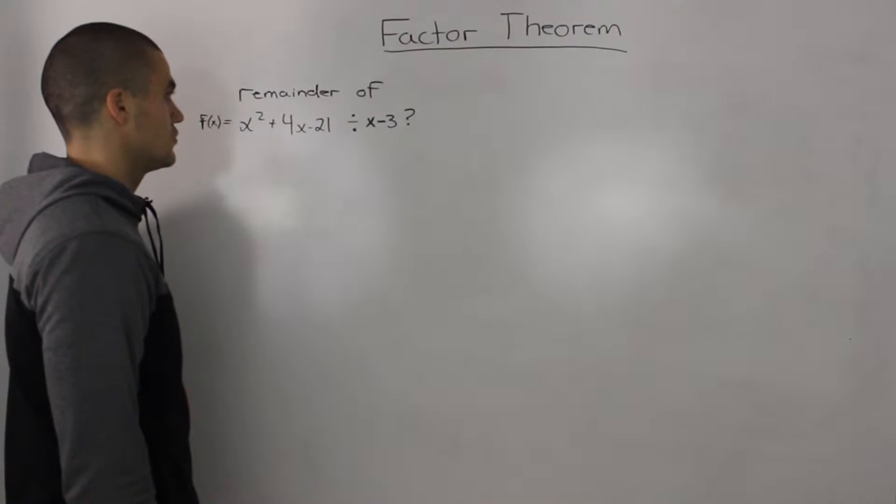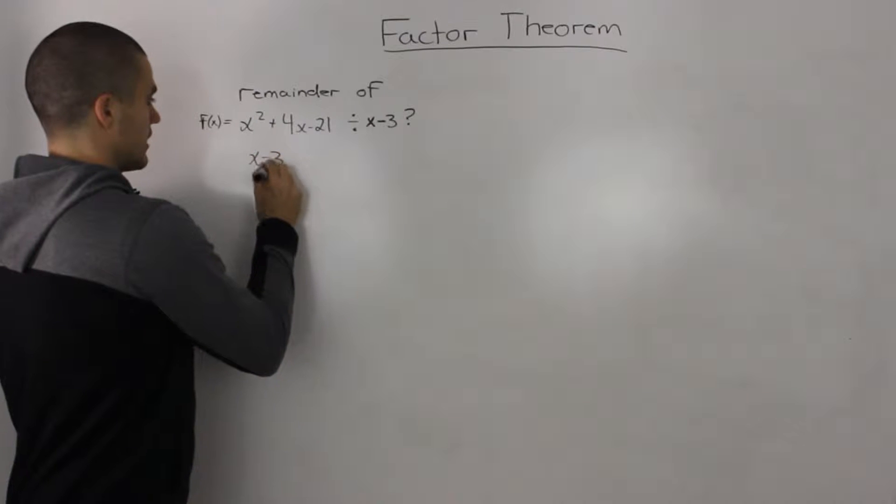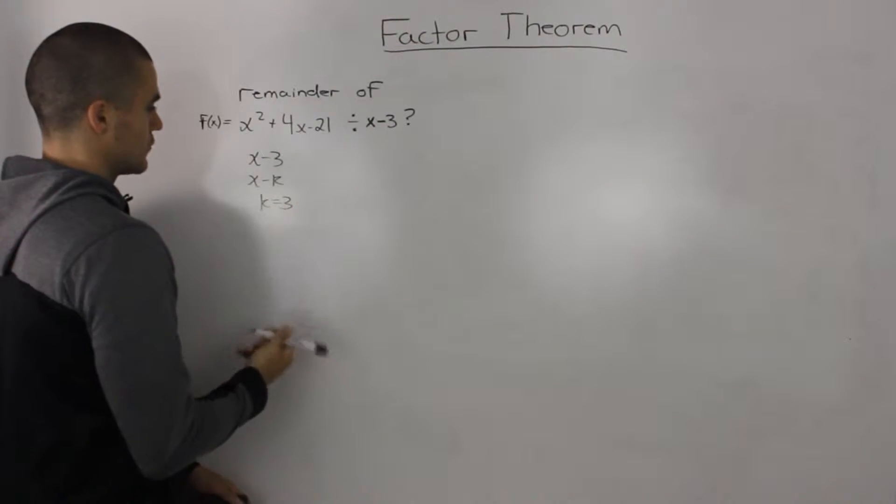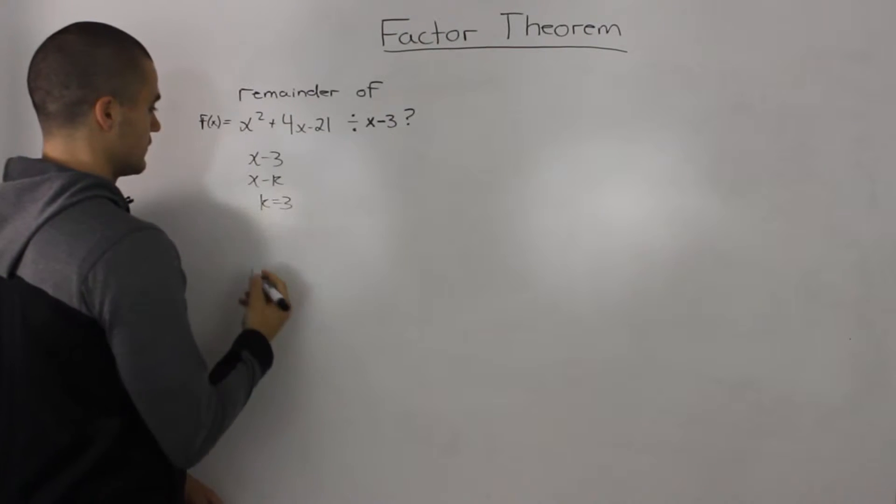We can do that using the remainder theorem. Our divisor is already in the x - k form, and our k value is 3. So to find the remainder, we would just plug in 3 into the x values of the dividend.